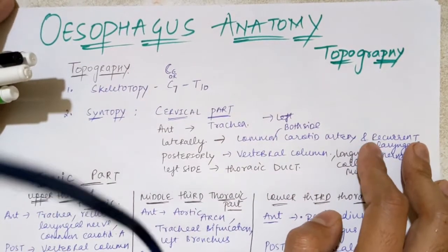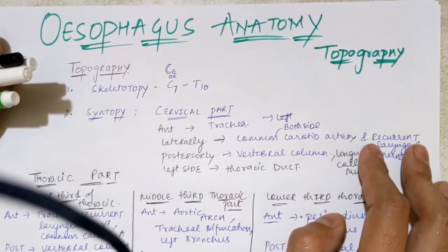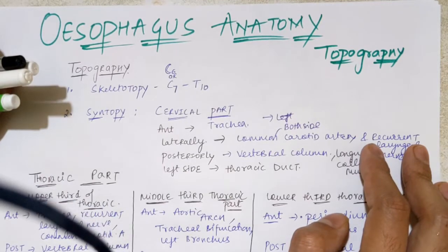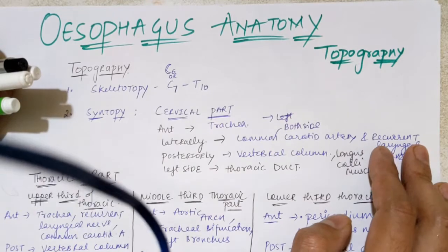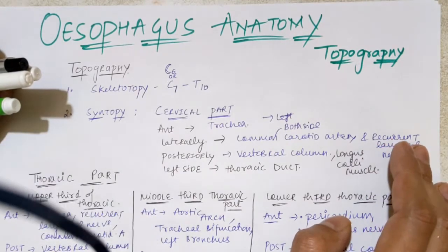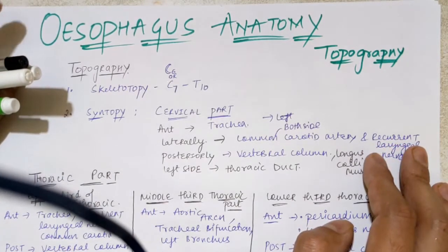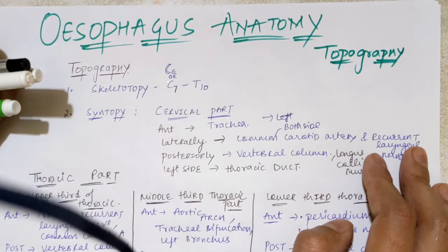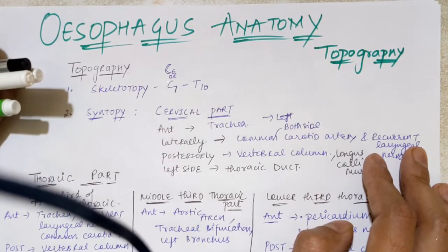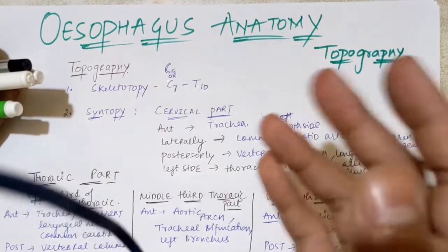We are in the section on the esophagus, the organ related to our digestive tract — the main organ through which the bolus passes from the pharynx to the stomach. In this video, we will be discussing topography: first, the relation with respect to the vertebral column, that is skeletotopy, and then the relation with respect to different organs.